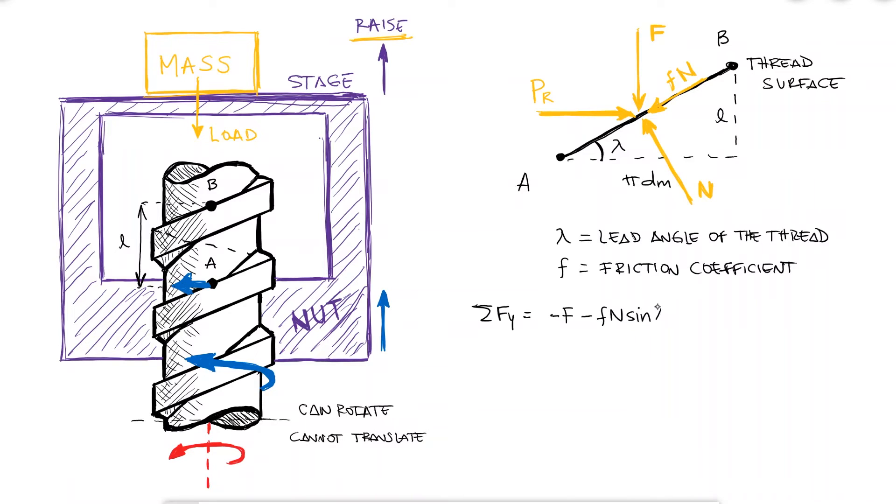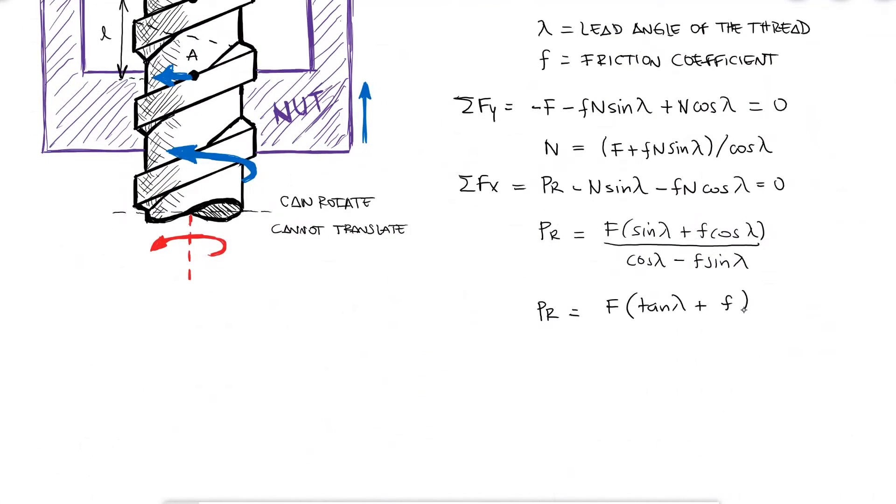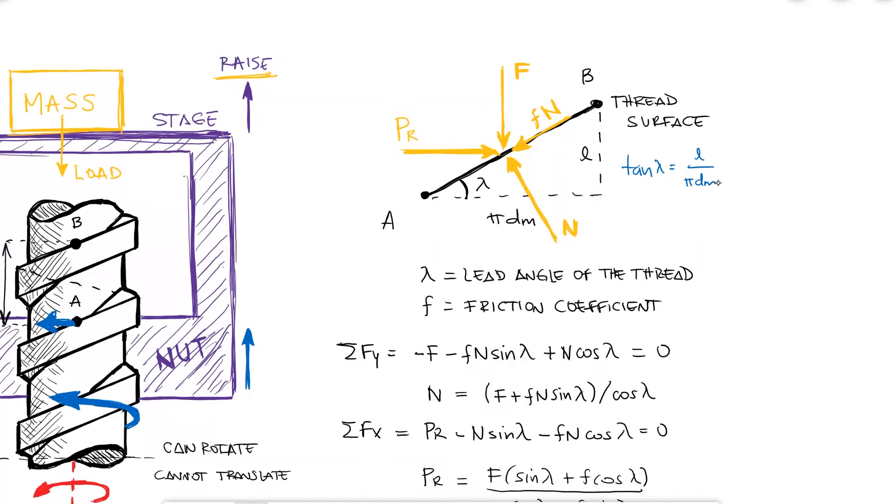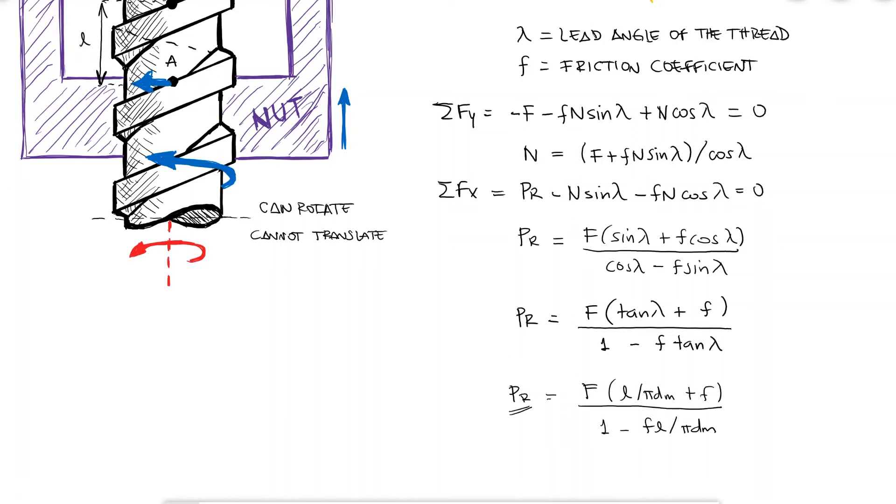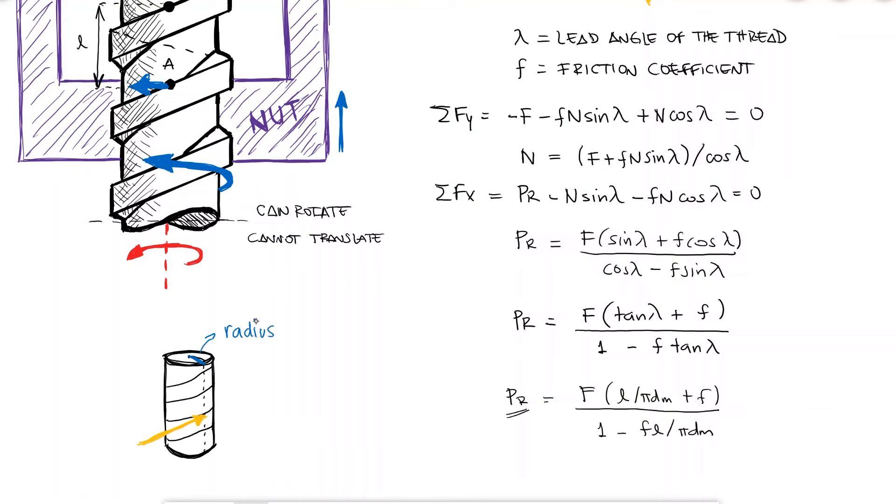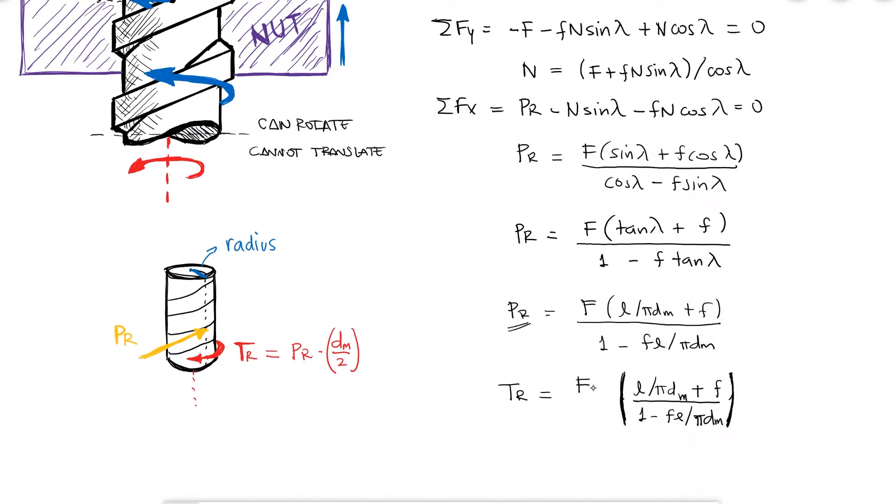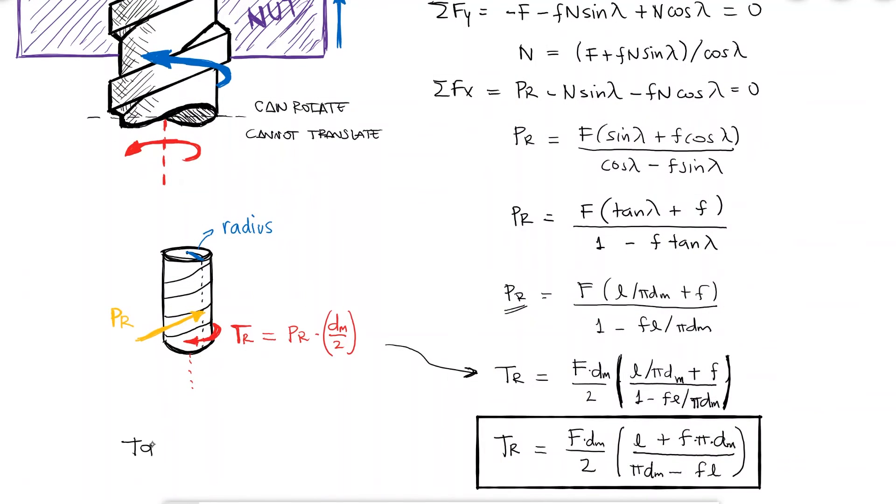From a sum of forces in the y direction, we can solve for the normal force and substitute that expression in the sum of forces in the x direction to solve for p r. Dividing by cosine of lambda in both the numerator and the denominator, and realizing that tangent of lambda is L over pi dm, we find an expression for the horizontal force p r, which happens tangentially to any point on the threads of the screw. Therefore, p r is used to calculate the torque required to raise the load by multiplying it by the mean radius of the screw, which is the mean diameter over 2. This would be the torque required to overcome thread friction and to raise the load, but we commonly refer to it as the torque required to raise a load.